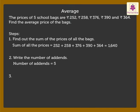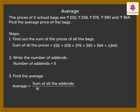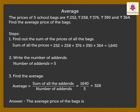Step 3: Find the average. Average is equal to sum of all the addends divided by the number of addends. Therefore, average is equal to 1640 divided by 5, which is equal to 328. Thus, the average price of the bags is 328 rupees.